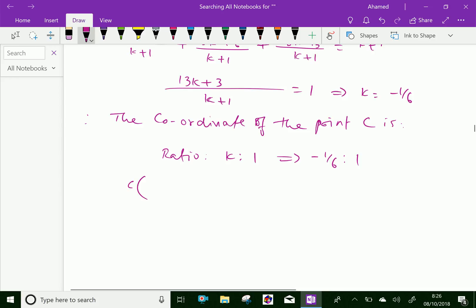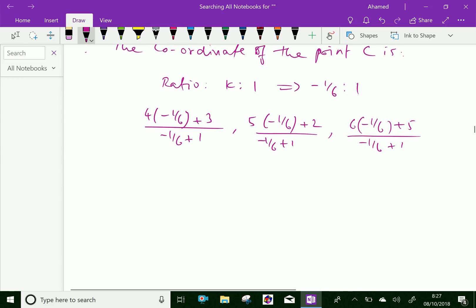Therefore, the point C is 14 over 5. That is 4 into minus 1 over 6 plus 3 over minus 1 over 6 plus 1, 5 into minus 1 over 6 plus 2 over minus 1 over 6 plus 1, and 6 into minus 1 over 6 plus 5 over minus 1 over 6 plus 1. After simplification, we get the point C is (14/5, 7/5, 24/5).